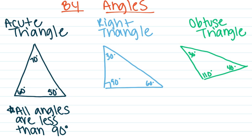Notice in this triangle, the angles are 60, 70, and 50. They are all less than 90 degrees. So that would be an acute triangle by its angles.